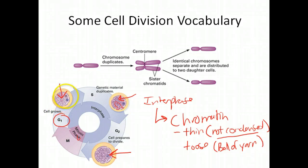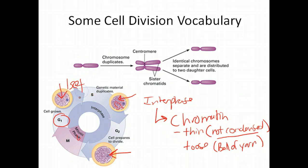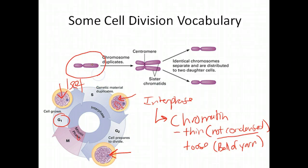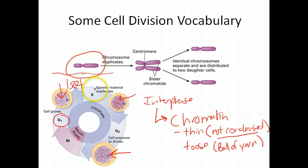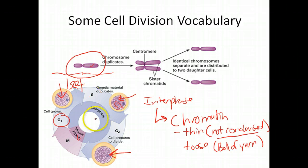In G1, you have one set of DNA — basically one chromosome. Your textbook makes the mistake of drawing it in a condensed way, but I don't know why textbooks do this. It's actually better drawn as just a strand — a string of DNA, very loose, very non-coiled. That coiling doesn't happen until the mitotic phase. So in G1, you only have one set.